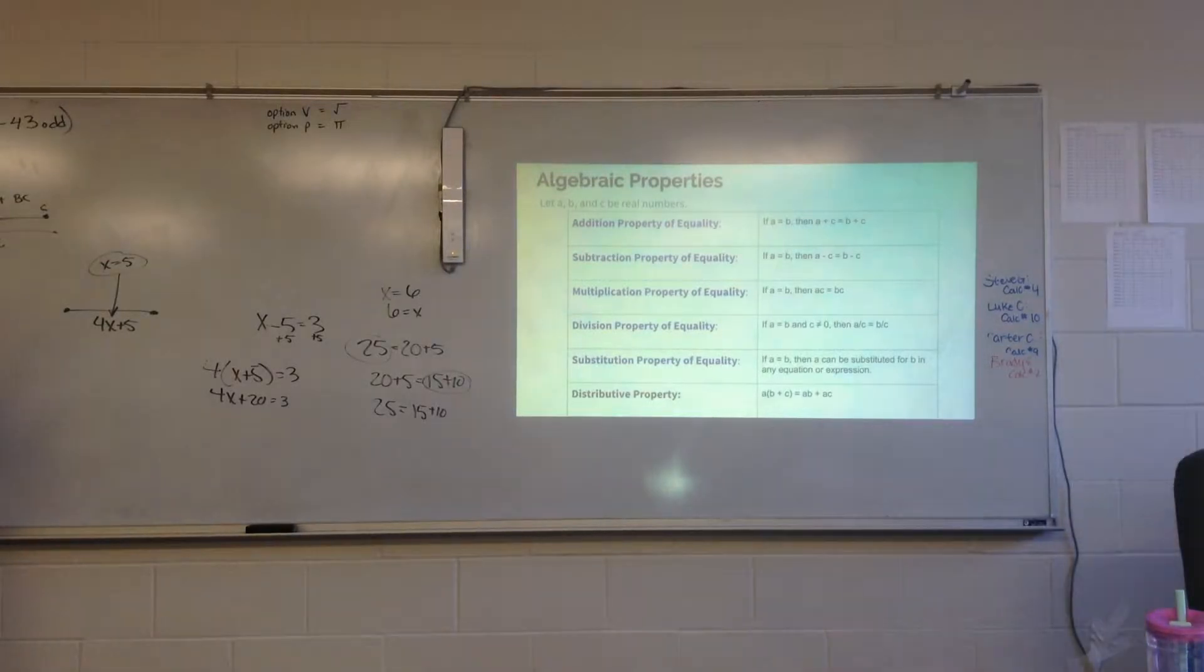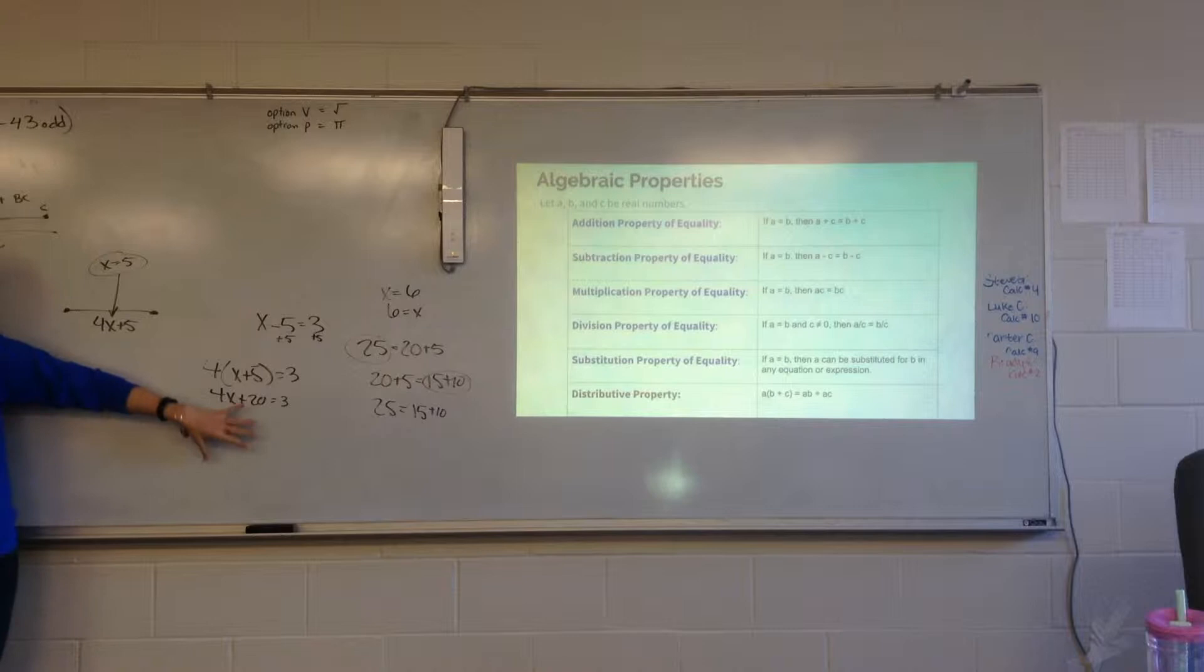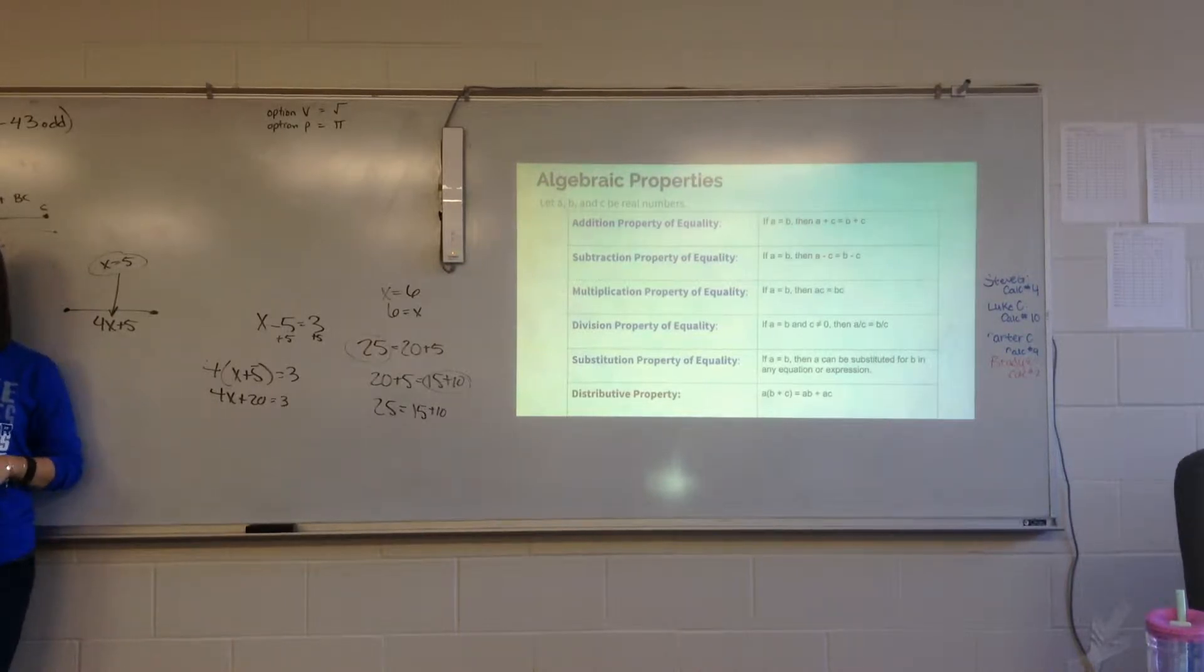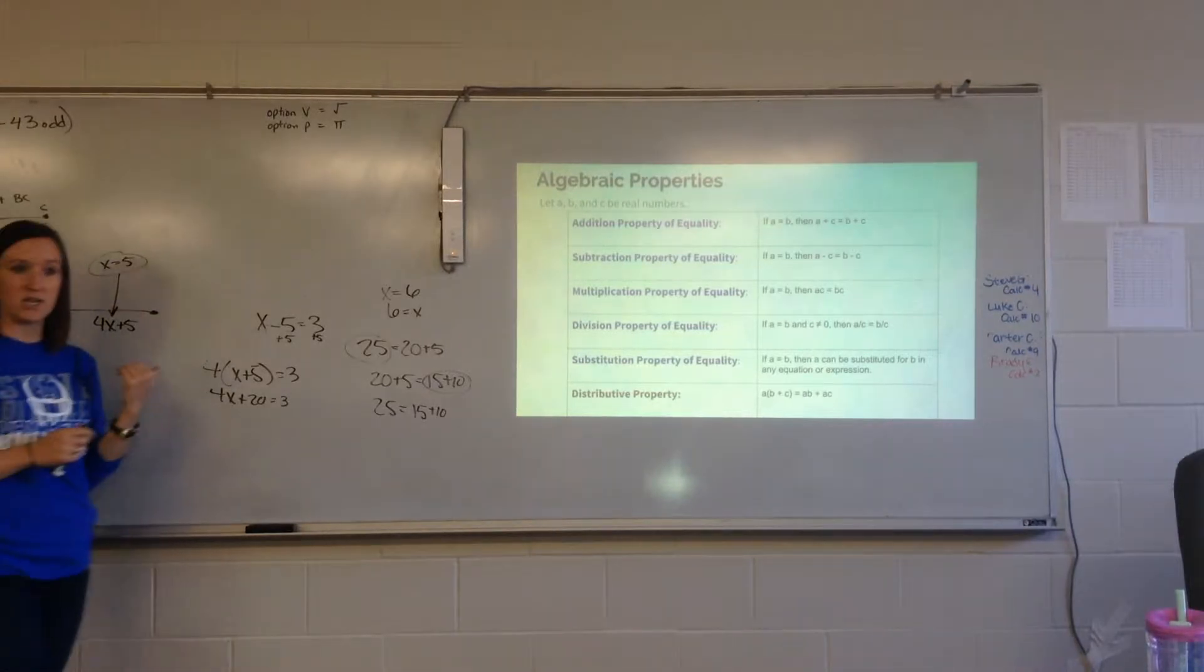Now, distributive property. Do we agree that 4 times x plus 5 equals 3 is equal to 4x plus 20 equals 3? Are those two equations equal? Yeah. That's distributive property. That's all that these properties are. There's lots of words, but you need to know what each property means and why we can solve equations like this.